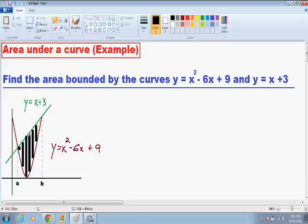So that is our top function since the top of the rectangles they all touch that curve. And if you notice the rectangles, the bottom of them, they all touch the red curve y equals x squared minus 6x plus 9. So that is our bottom function since the rectangles, the bottom of them all touch that function.